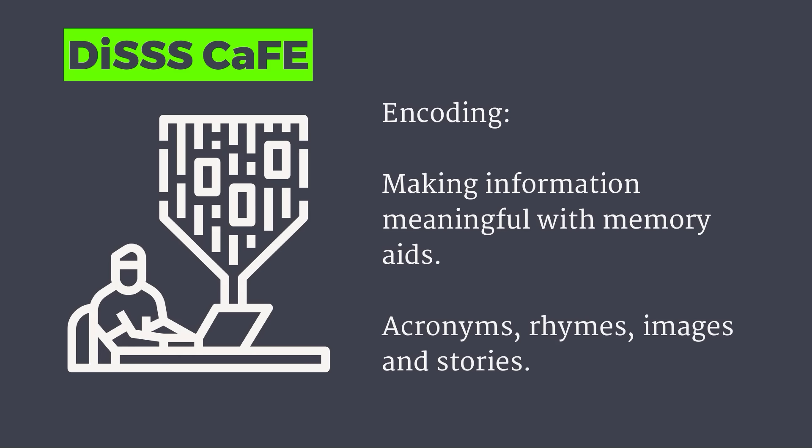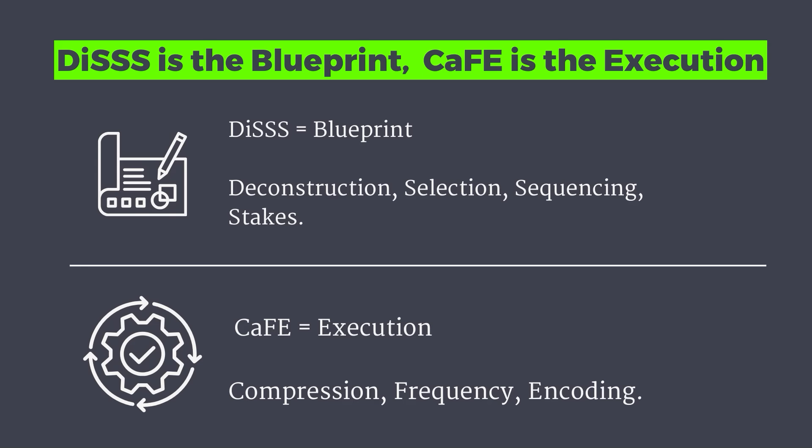Encoding refers to ways you can make information personally meaningful to you. This is done through elaboration — connecting new information to things you already know — mnemonics, using acronyms or rhymes or images to aid recall, or storytelling and emotional connection, attaching humor or personal stories that can make something easier to remember. Together, DiS is the blueprint and CAFE is the way that you're going to execute on that blueprint.